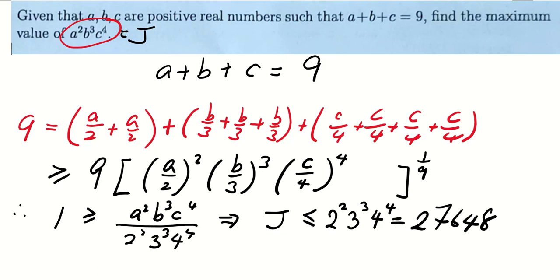As usual, we want to ask ourselves whether the equality holds. And we know that the equality holds if and only if A over 2 equals to B over 3 equals to C over 4. And since the sum of them equals to 9, so each of these terms is equal to 1.